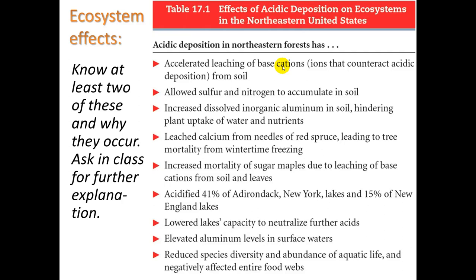Because some of these minerals are getting dissolved away by acid rain, something else that can happen is a loss in the ability for that water or soil to neutralize further acids that come along. There's a concept in chemistry called buffers — minerals or dissolved minerals that can resist the change in pH when you add an acid. When you wash away those minerals, you reduce the soil's ability to protect itself from further acid rain. The end result is reduced species diversity and abundance of aquatic life, which can negatively affect entire food webs.